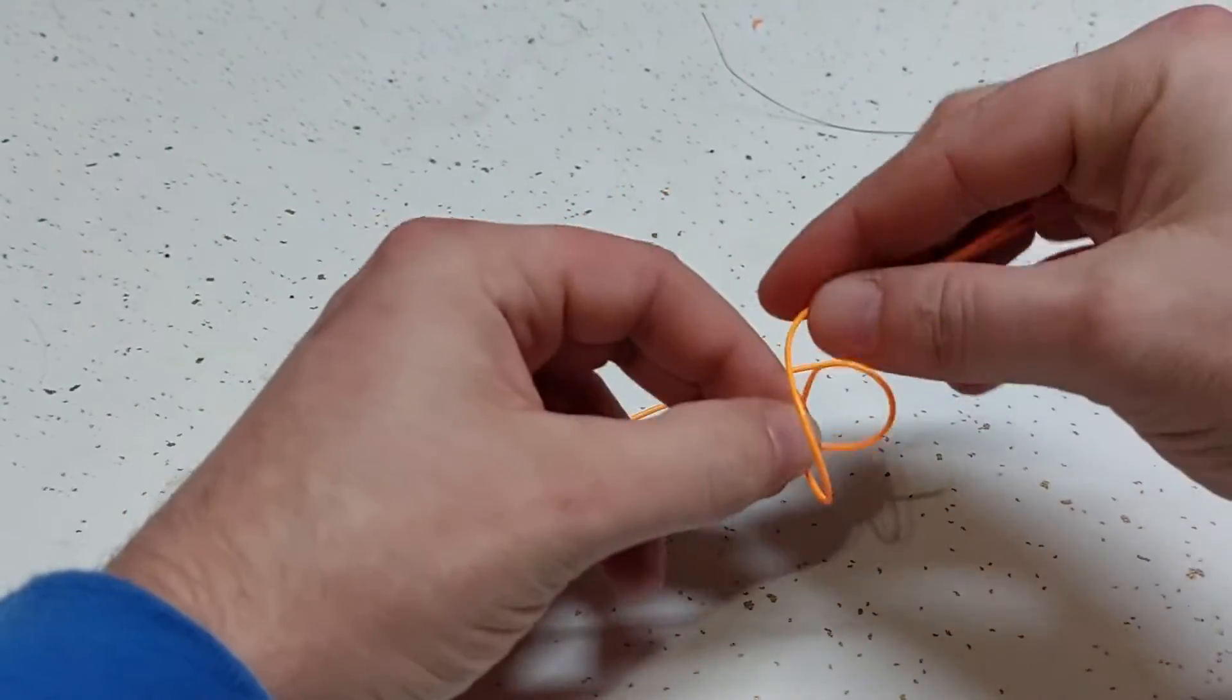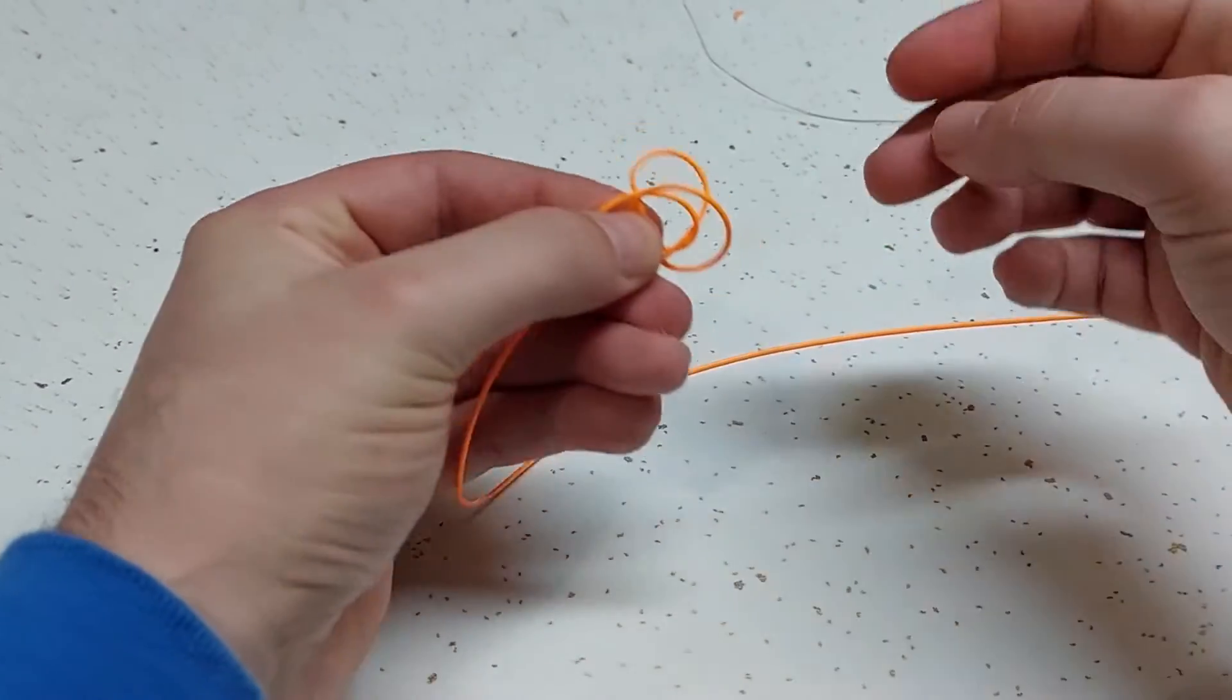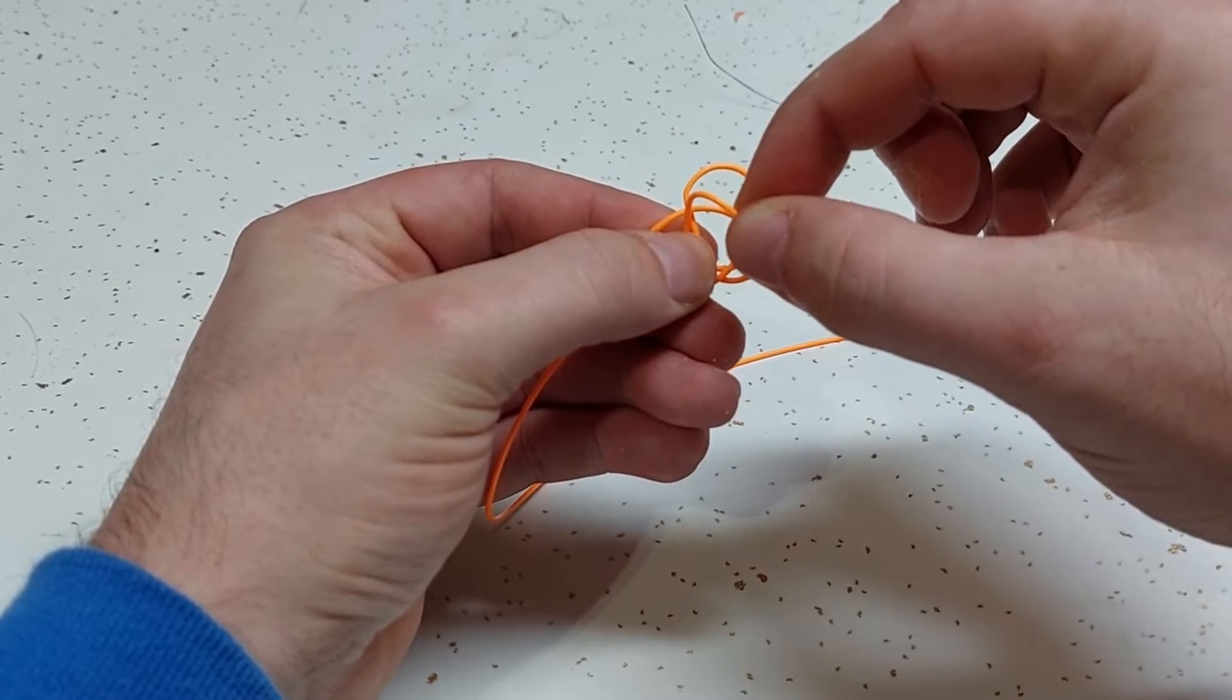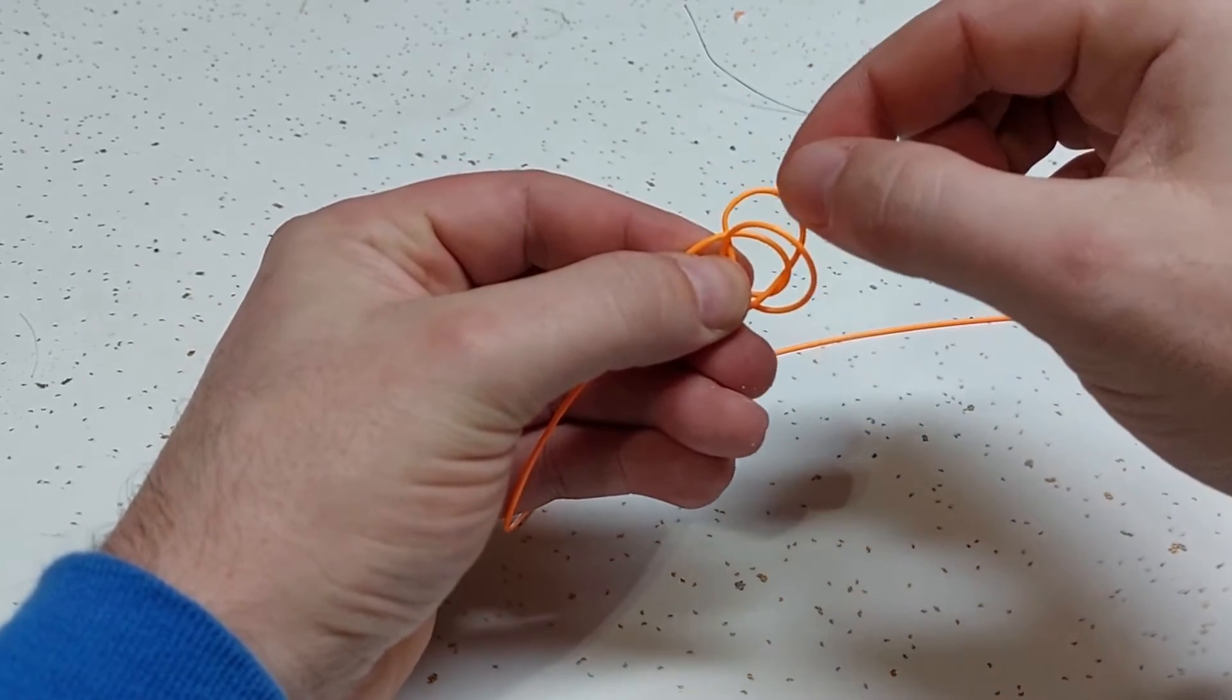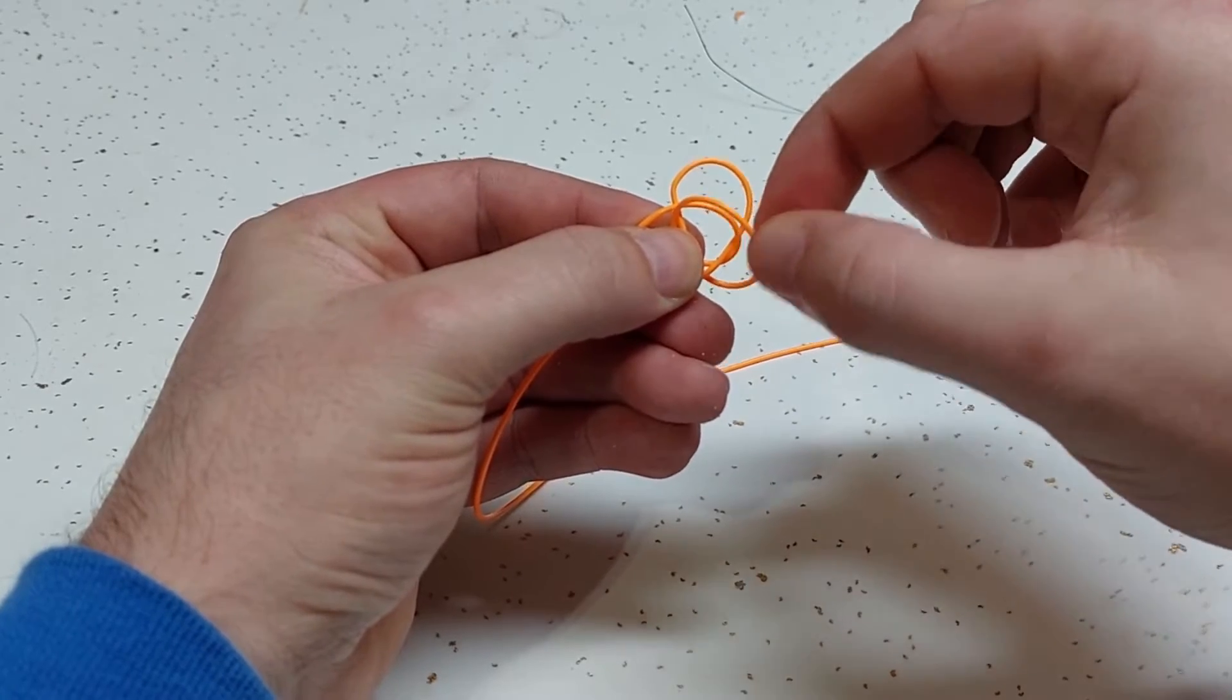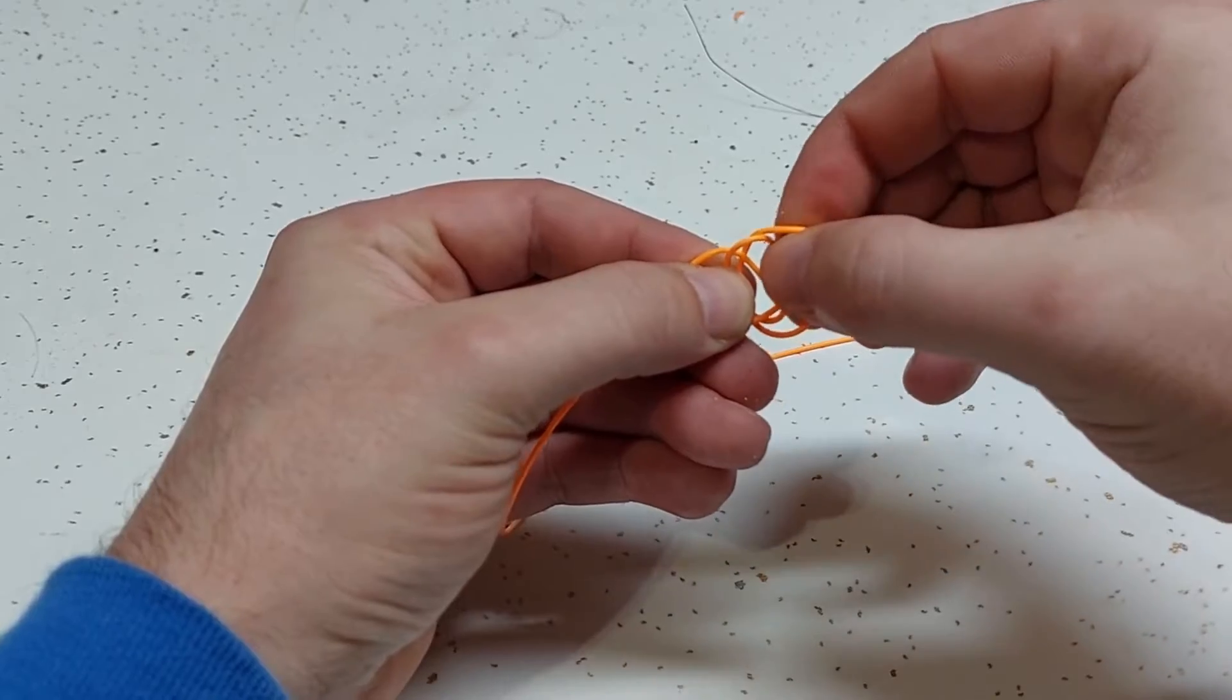Oh, we'll do it one more time - it came undone. Run it through in loops just like that. And then this is the first loop you made, this is the second loop that you made, and then this is the piece in the middle. Take this piece, pull it over top...